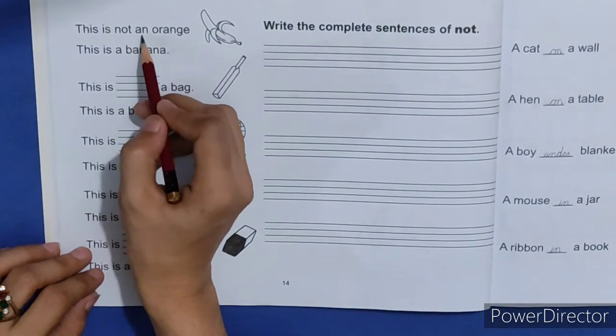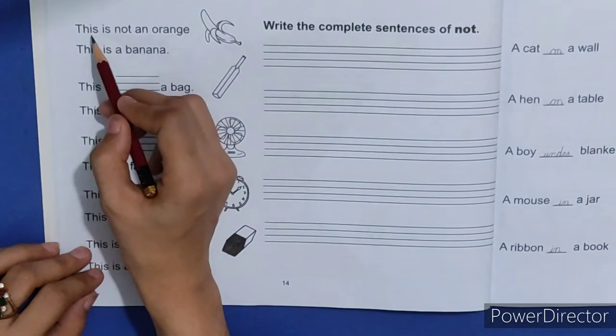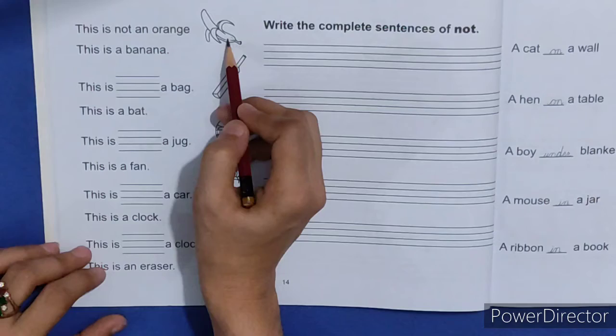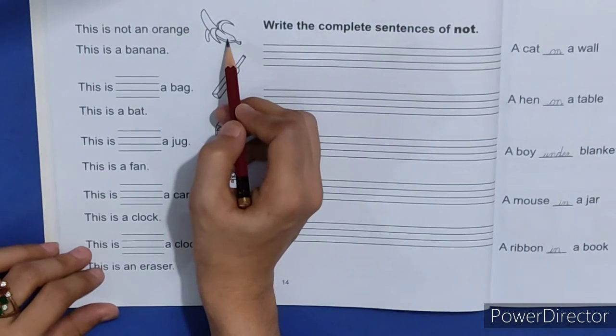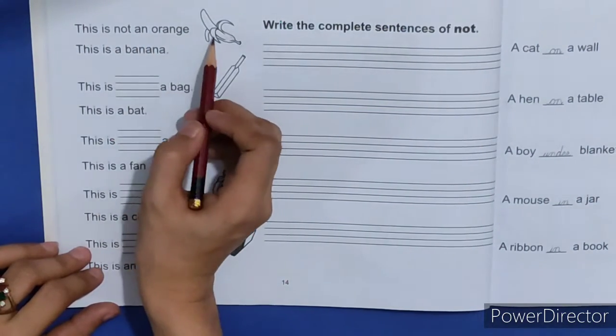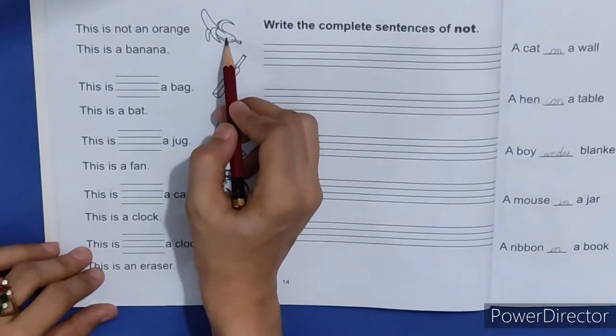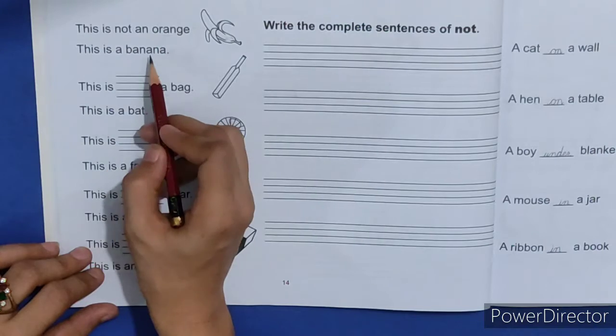This is not an orange. Ye orange nahi hai. This is not an orange. This is a banana. Ye banana hai, keela hai. This is a banana.